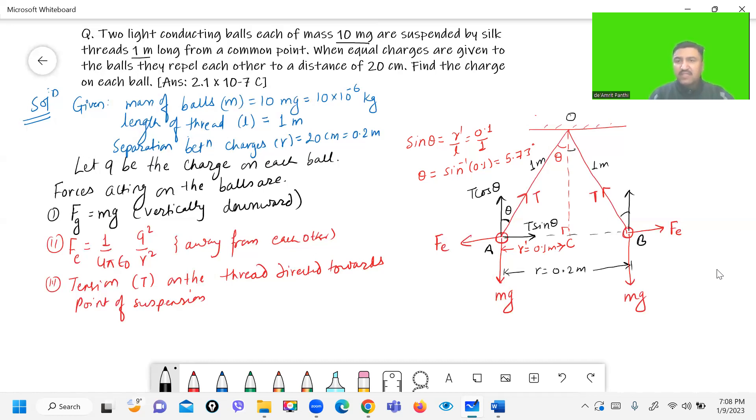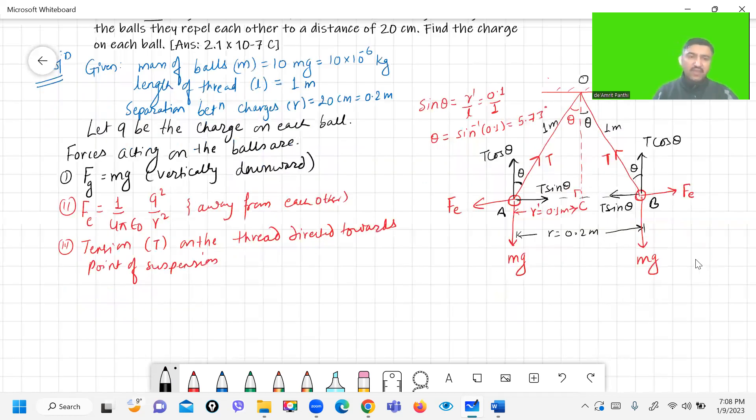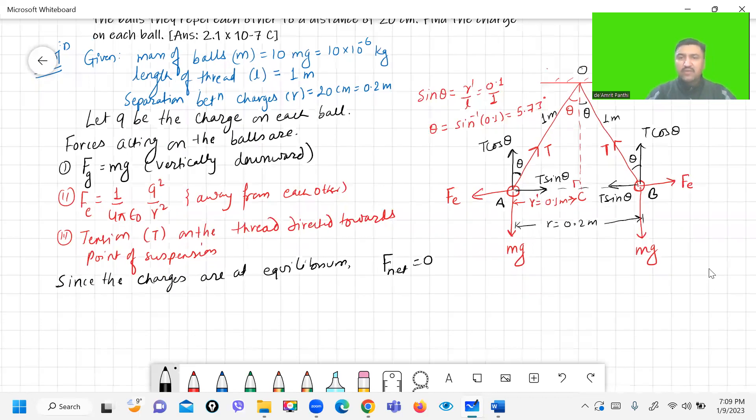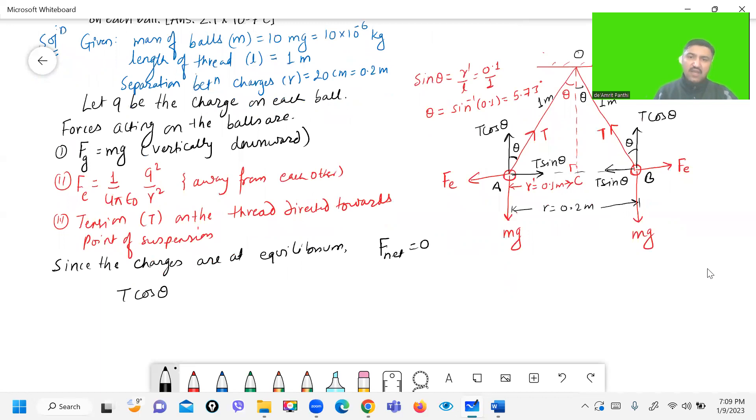Again, the angle BOC is theta so angle between this perpendicular line and the thread is also theta. So the component of T is T cos theta perpendicular to the line, and along the line joining it's T sine theta. Since the charges are at equilibrium, net force must be equal to zero. For net force to be equal to zero we must have T cos theta equals mg and T sine theta equals electrostatic force.